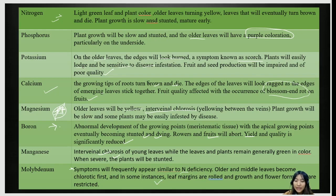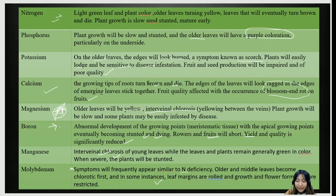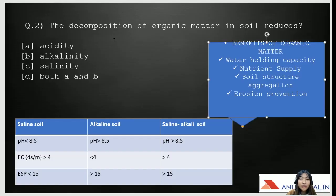Try to remember the major nutritional deficiency diseases — for example, whiptail of cauliflower is caused by molybdenum, khaira disease of rice is caused by zinc, and there is necrosis and black tip as well. Comment your answer to this question: the heart rot of sugar beet is caused by deficiency of which nutrient?